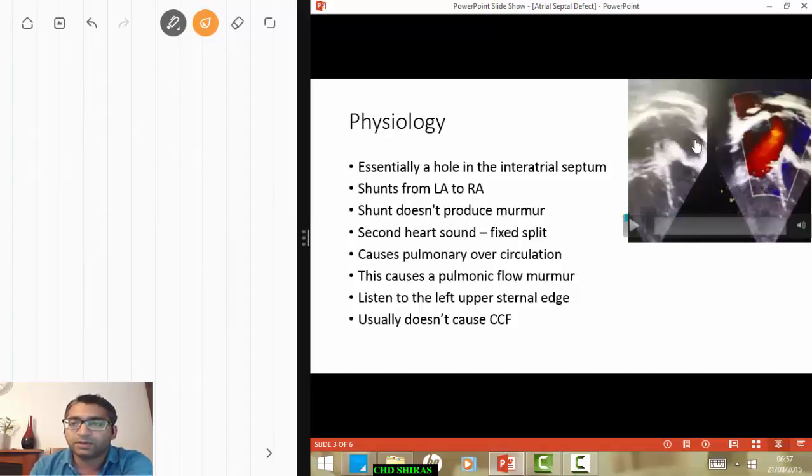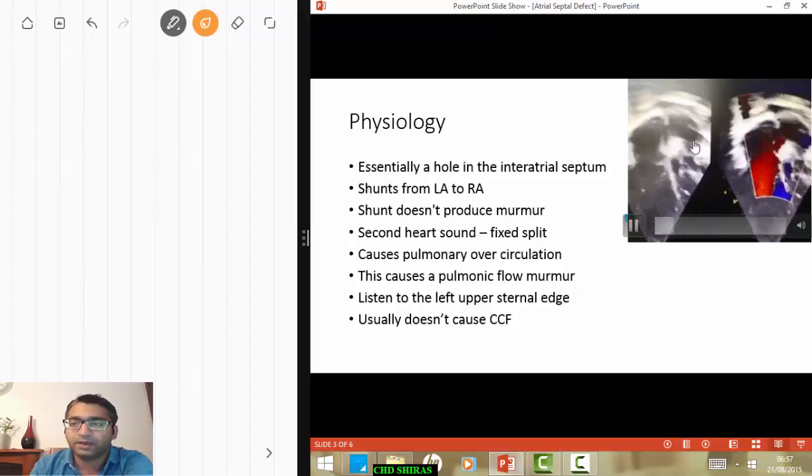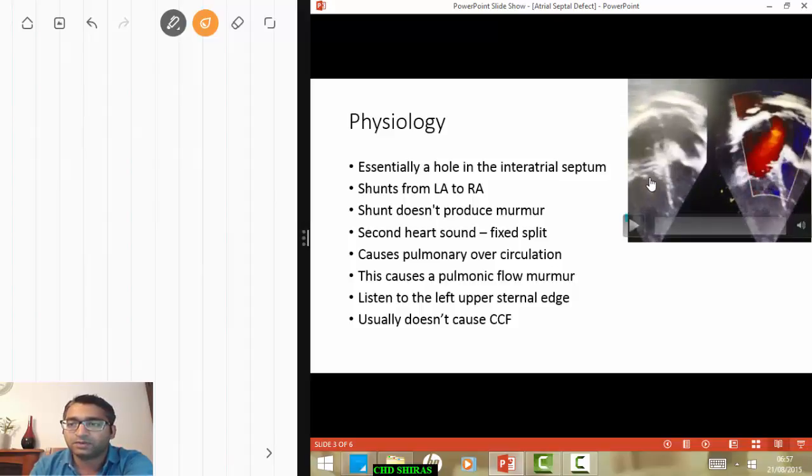We know that the blood would go from the left atria into the right atria, across the tricuspid valve into the right ventricle, and from there it would get pushed into the pulmonary artery. So there's excess blood flow across the pulmonary valve, and this causes a pulmonic ejection murmur.